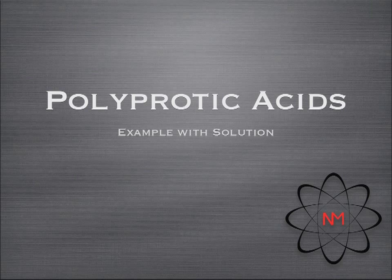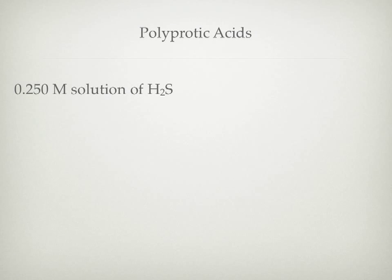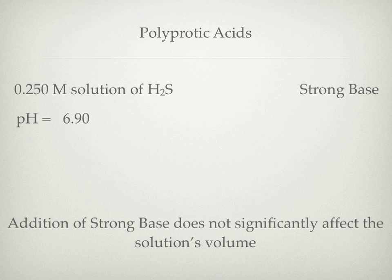Today we're going to be looking at polyprotic acids, specifically an example involving hydrogen sulfide. In our example, we're going to have a 0.25 molar solution of hydrogen sulfide. We're going to titrate that with a strong base until we get to 6.9 on the pH scale. It's important to note that the addition of the strong base will not significantly affect the solution's volume.